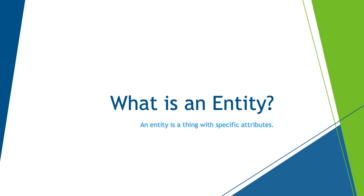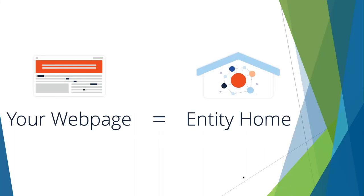What is an entity? The entity refers to a specific object or thing within your structured data markup — just getting the vocabulary down so we can have a common conversation. It could be a product, an event entity, a person entity, et cetera, and they all have attributes. Your website can be thought of as your organization's entity home — it's a hub, a conduit, the housing for your structured data. Anything that can interpret it, it's your digital front door.